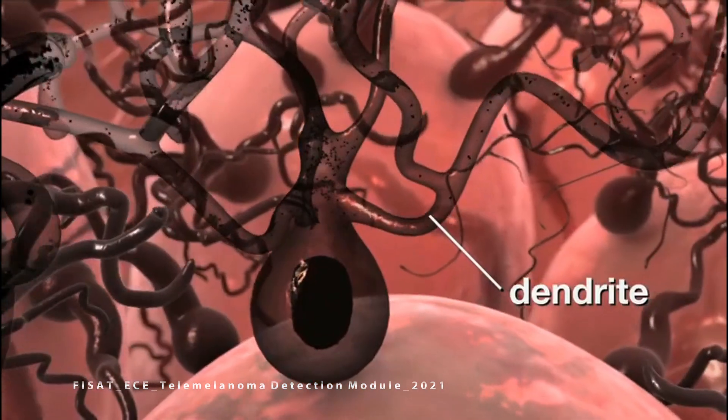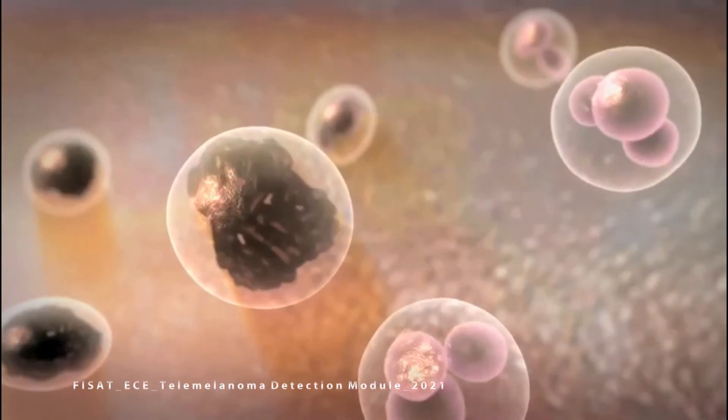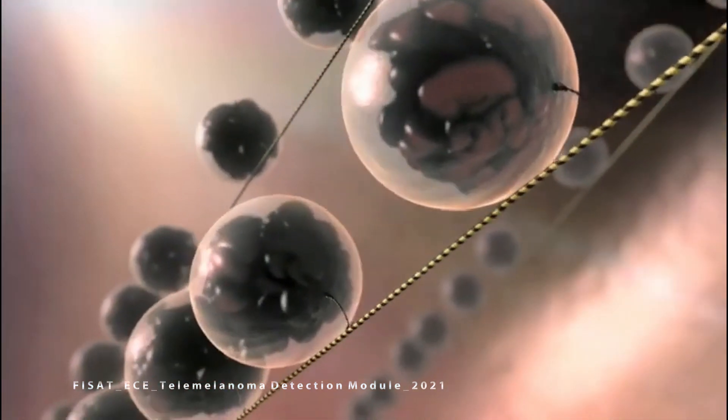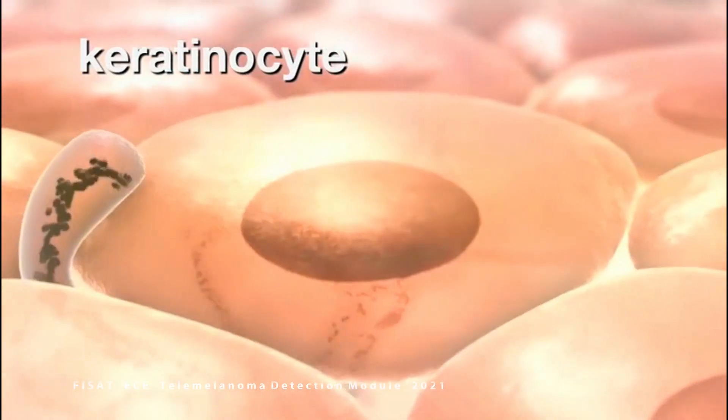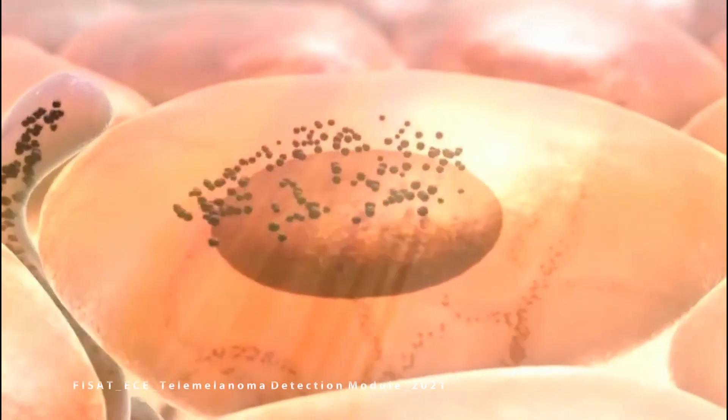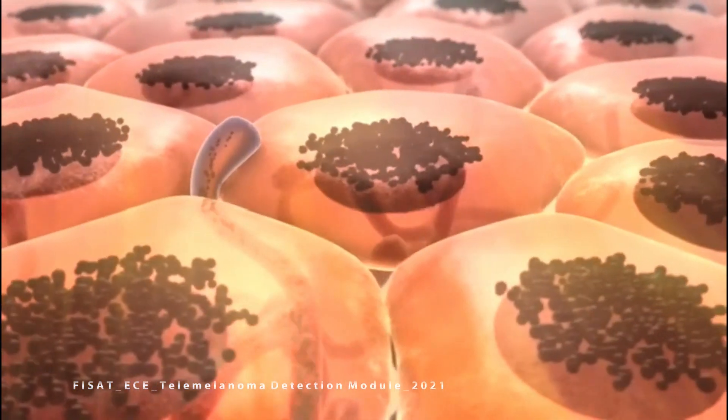Dendrites transfer pigment granules to adjacent epidermal cells. Melanin is formed in organelles called melanosomes, then transferred through dendritic cell processes to adjacent keratinocytes. In keratinocytes, melanin granules are mainly in the apical cytoplasm where they shield the nucleus from ultraviolet light.